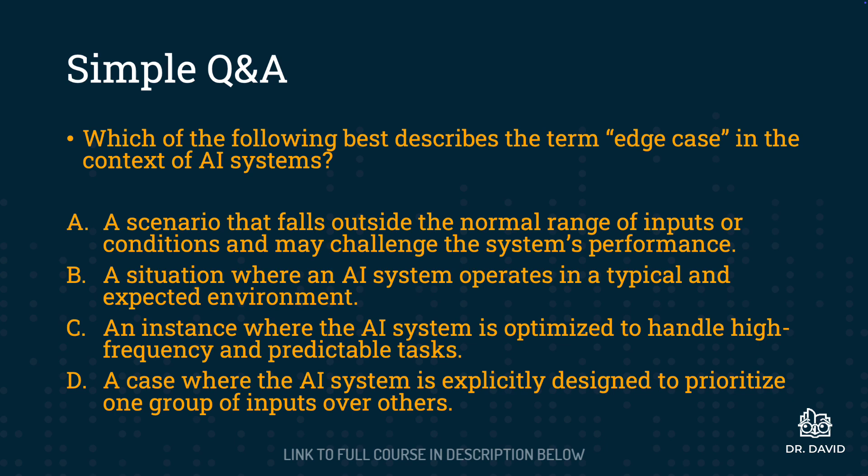The first type of question is the simple Q&A. As the title suggests, this is a very straightforward question followed by four possible answers. The example here: which of the following best describes the term 'edge case' in the context of AI systems? A — a scenario that falls outside the normal range of inputs or conditions and may challenge the system's performance. B — a situation where an AI system operates in a typical and expected environment. C — an instance where the AI system is optimized to handle high-frequency and predictable tasks. Or D — a case where the AI system is explicitly designed to prioritize one group of inputs over others. I'm not going to dive into the answer and the analysis here — I just wanted to provide an example of what a simple Q&A question looks like.